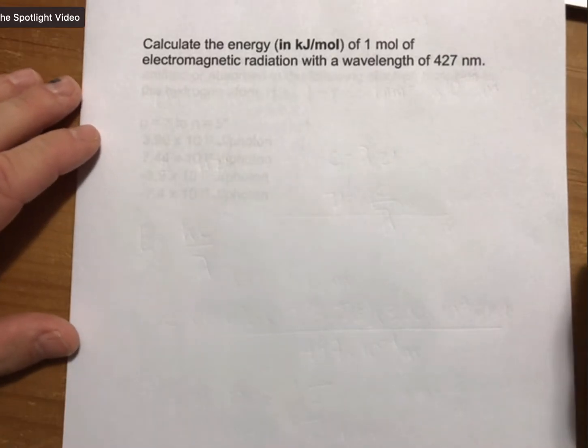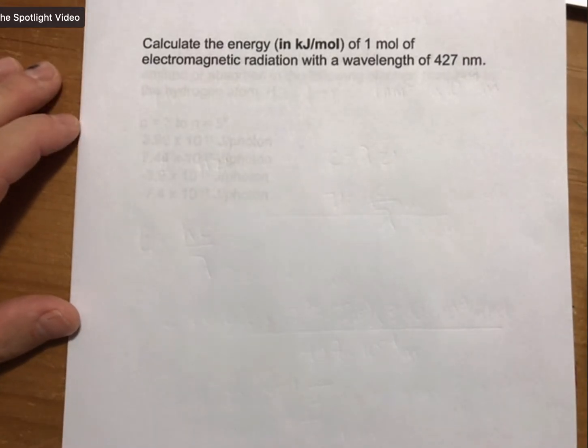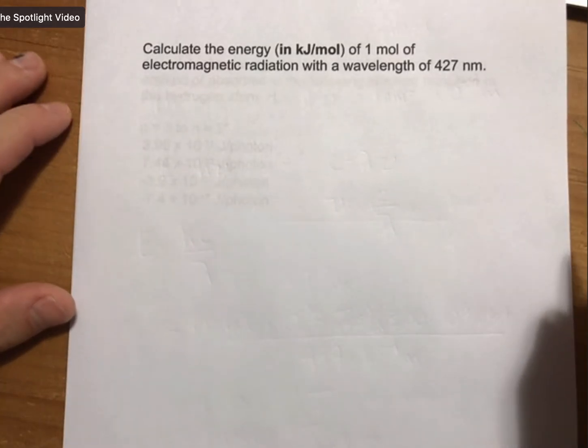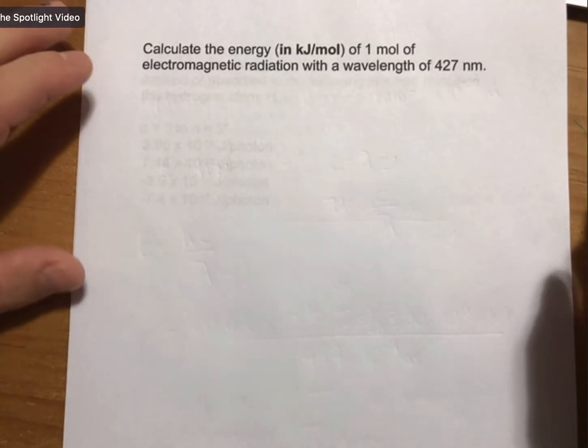It says calculate the energy, this time in kilojoules per mole of one mole of electromagnetic radiation with a wavelength of 427 nanometers. So this is going to actually start out with a similar calculation to last time.